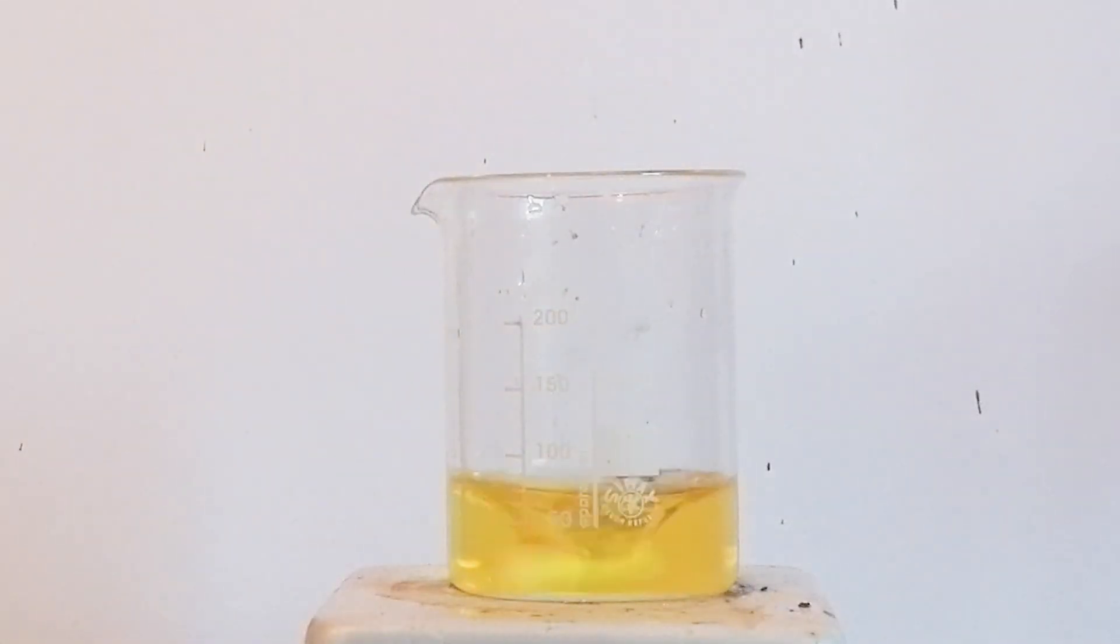After it has all dissolved, the solution turned yellow, which means that we've successfully turned some of the sodium hydroxide into sodium hypoiodite.